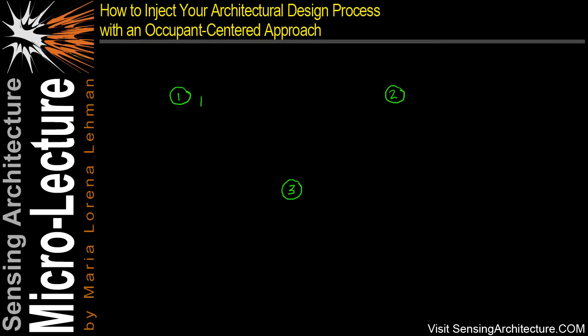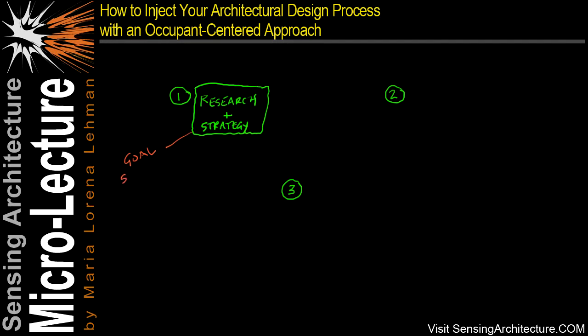The first step is to research and strategize. This step will help you uncover ways to better understand your occupant. Such research can come from existing knowledge and from new design strategies that you devise. Within this step you're basically setting the goals for your project as well.